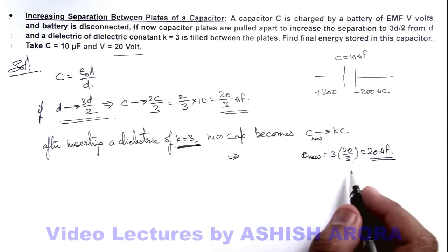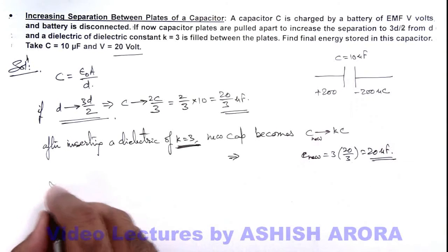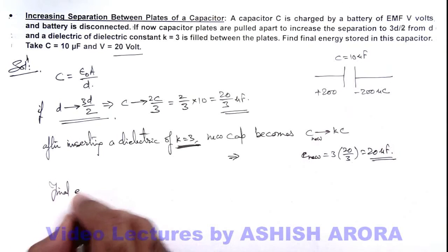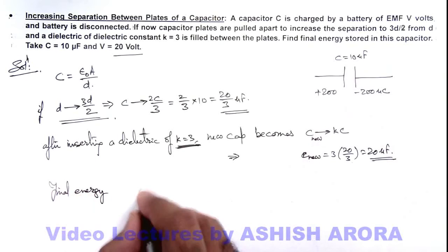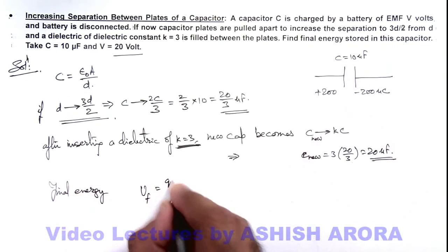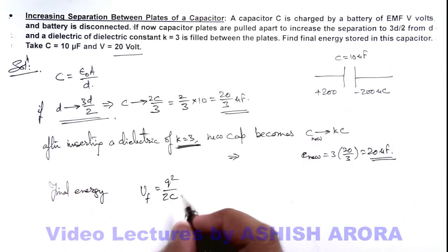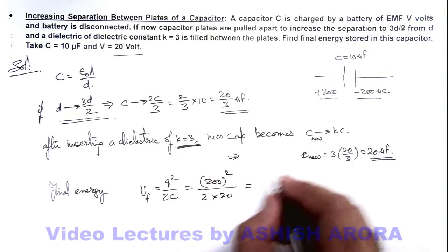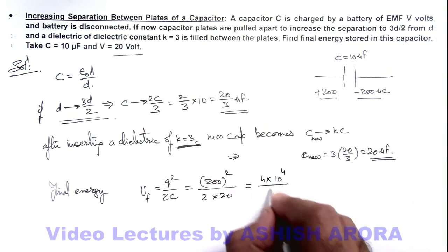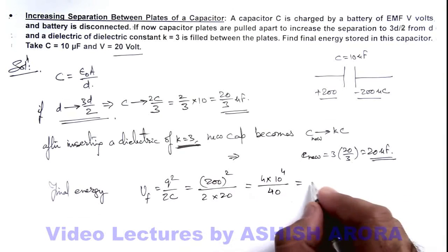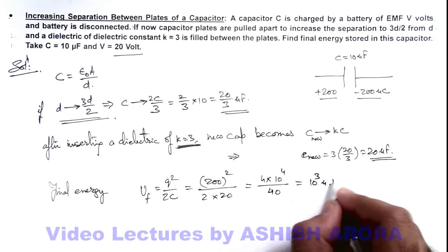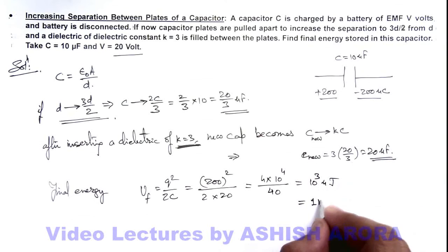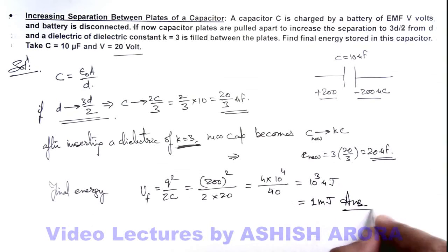So now it is asking the final energy stored in capacitor. Final energy can be given by q squared by 2C. As battery's disconnected, charge on the plates will remain same. So this is 200 whole square divided by 2 multiplied by 20. So here this is 4 into 10 to power 4 by 40, and this is 10 to power 3 microjoule which can be written as 1 millijoule of energy. That is the answer to this problem.